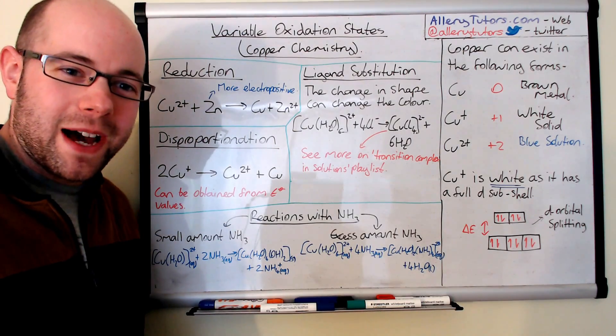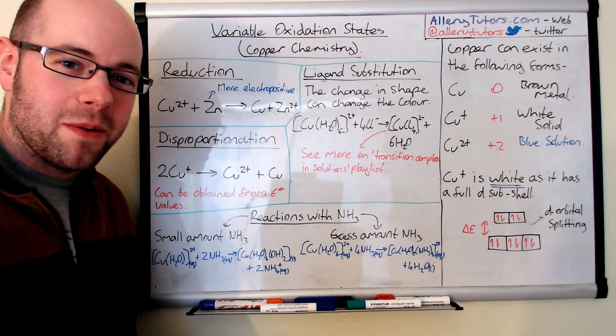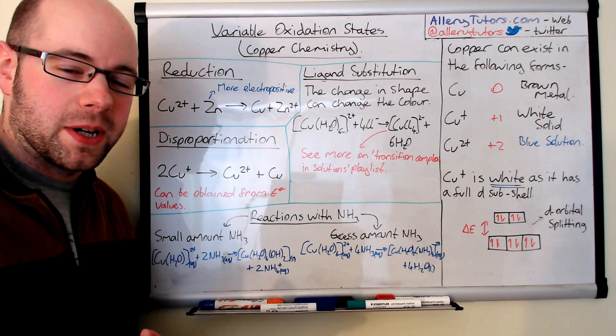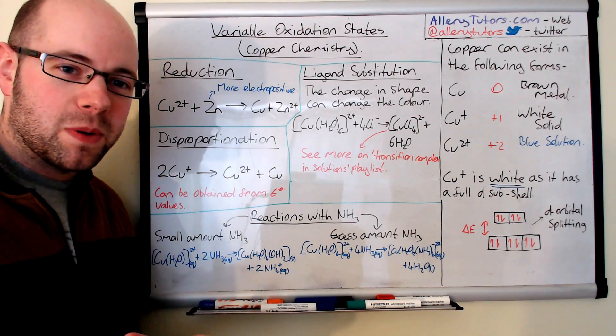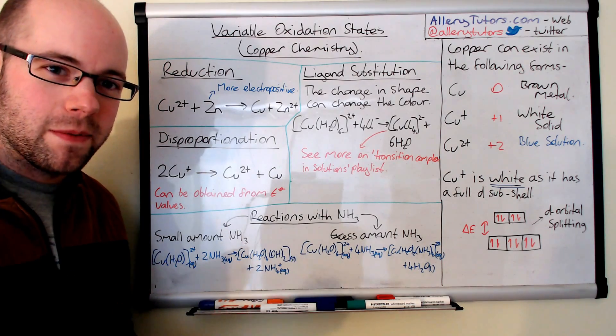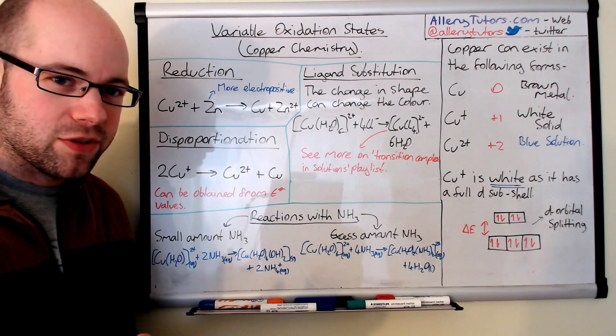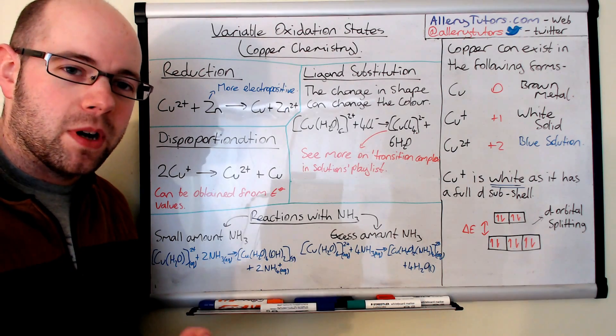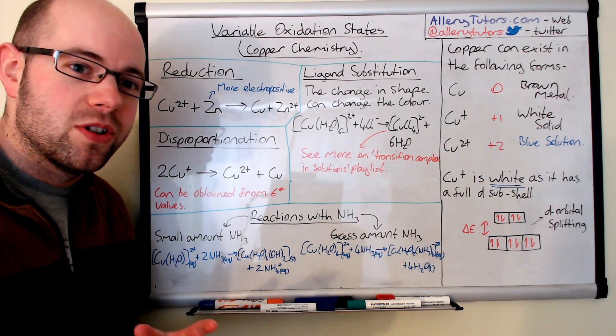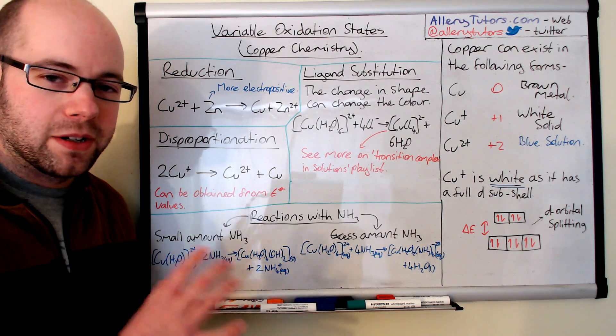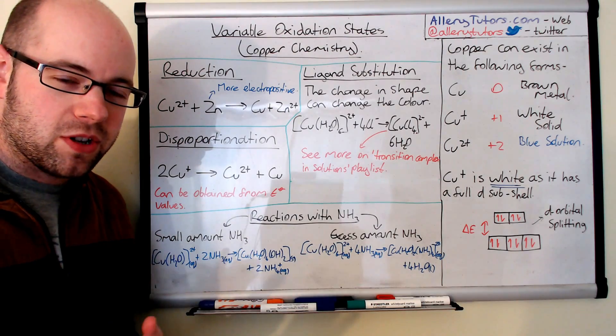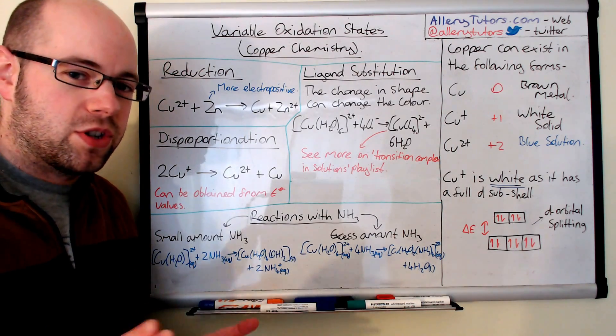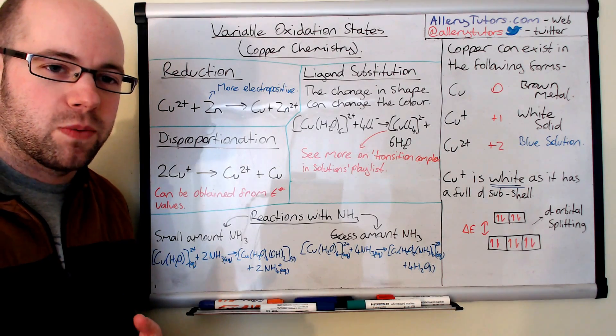Hi there, my name is Chris Hammers and I'm alubitutis.com. In this video we're going to be looking at variable oxidation states, but this time we're going to be looking at copper chemistry. So copper is one of these elements that's used quite a lot, particularly in things like electrical wiring as it's a really good conductor of electricity. We're also going to look at the copper solutions and reactions. So we're going to look at some reduction reactions, a little bit of disproportionation, a bit of ligand substitution, and reactions with ammonia as well.